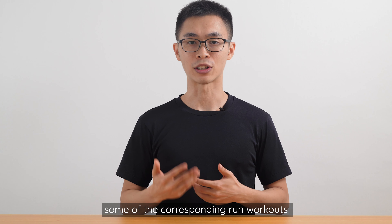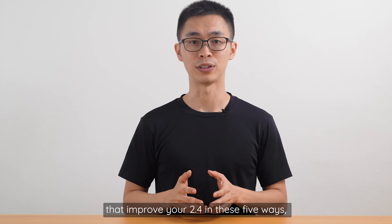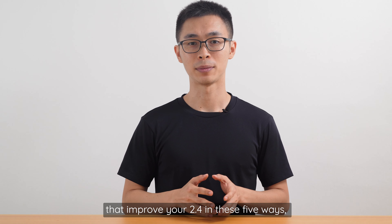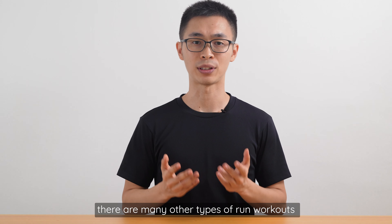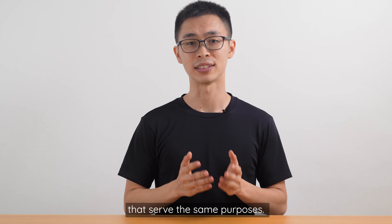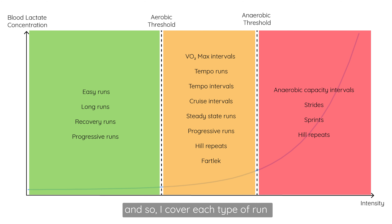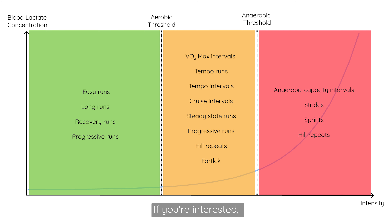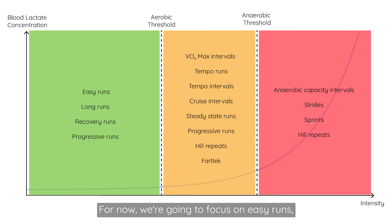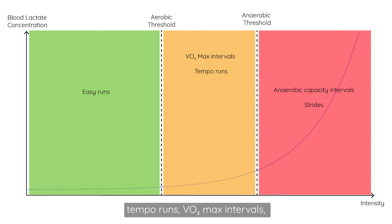I will now go through some of the corresponding run workouts that improve your 2.4 in these 5 ways, but to be clear, there are many other types of run workouts that serve the same purposes. The list is quite extensive, so I'll cover each type in a future video. For now, we're going to focus on easy runs, tempo runs, VO2 max intervals, anaerobic capacity intervals, and strides.